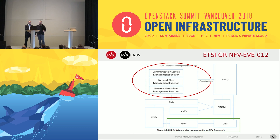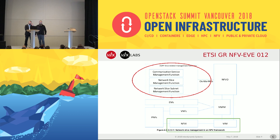In the ETSI document NFV EVE 012, they tried to define where a network slicing component fits. We know that OpenStack is typically the NFVI — the NFV infrastructure — and the virtual infrastructure manager, shown in the green box. In this diagram we've separated out a distinct function that performs network slicing.